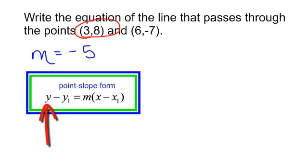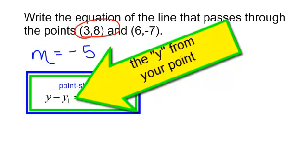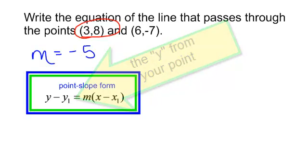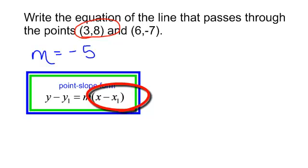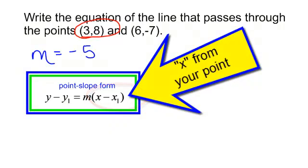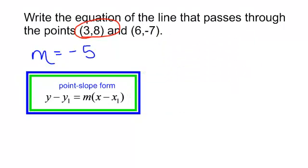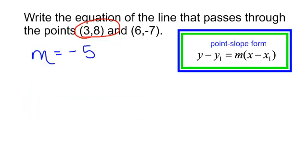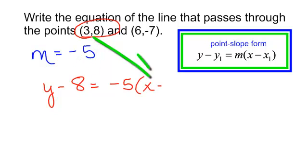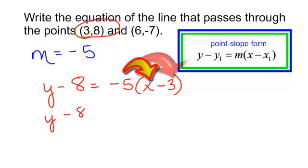I am going to write my equation. This says y, really y, just y, minus y sub 1 means pick a y from your point. That is equal to the slope times in parenthesis, don't forget that parenthesis, x, really x, just x, minus x sub 1 means x from your first point. Now I do not care which x you pick or which y, but just make sure you pick the x and the y from the same point. So I will have y minus 8 is equal to negative 5 times x minus 3. I will do a little bit of distributive property.